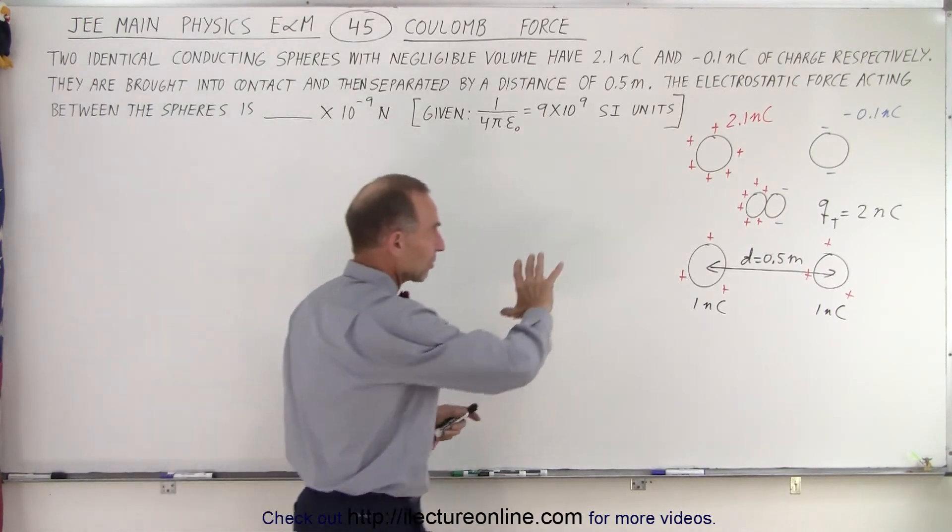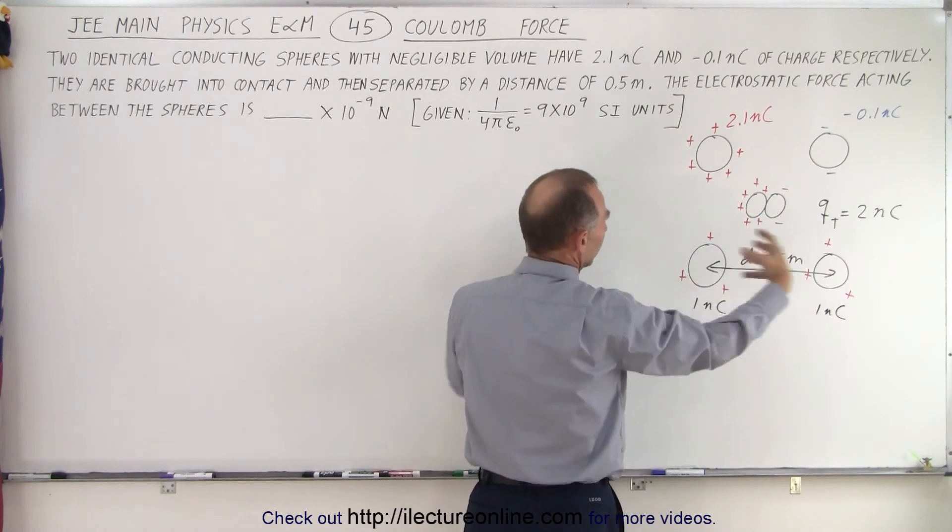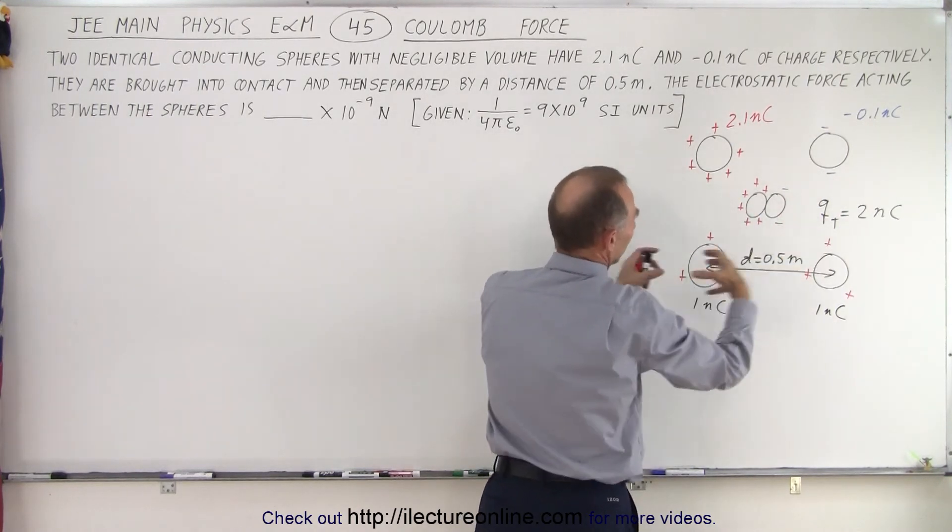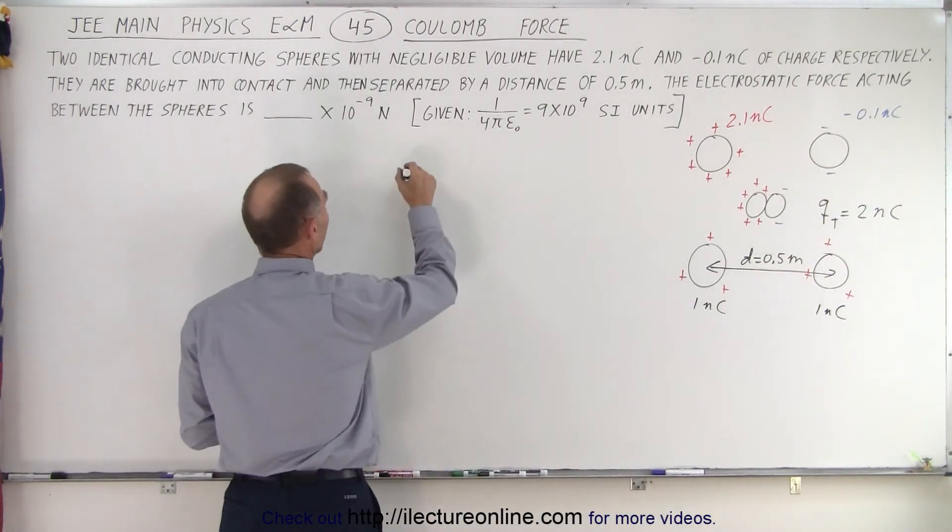This is fairly straightforward. You bring them in contact, the charges redistribute themselves. The total charge will be the two added together. When you separate them, each will have half the charge on them.